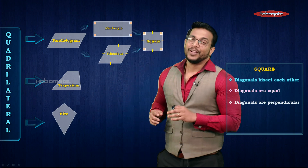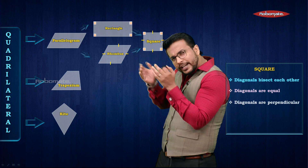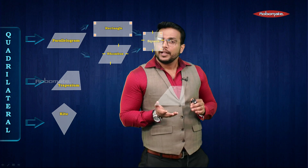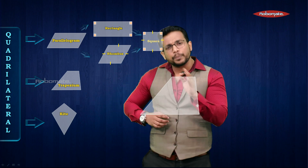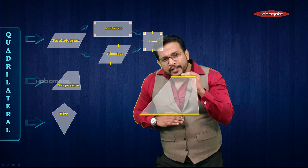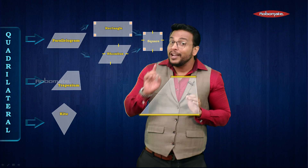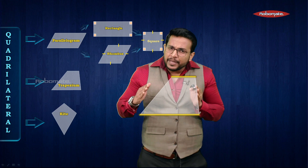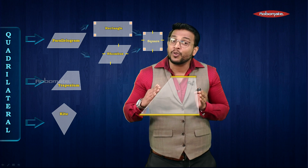We have understood the first category — the parallelogram. Let's move to the next category: the trapezium. In a trapezium, out of the two pairs of opposite sides, only one pair is parallel and the other pair is not parallel. Now I'm going to modify this trapezium with respect to its non-parallel sides.